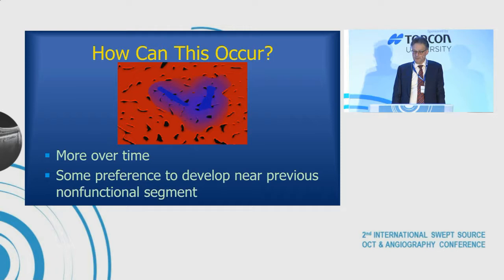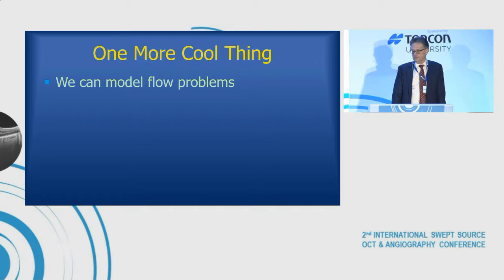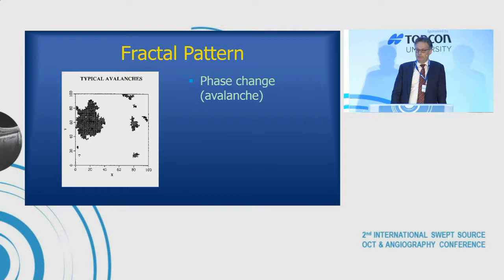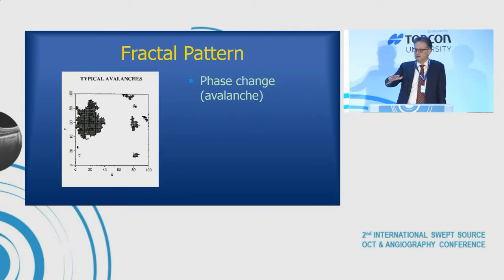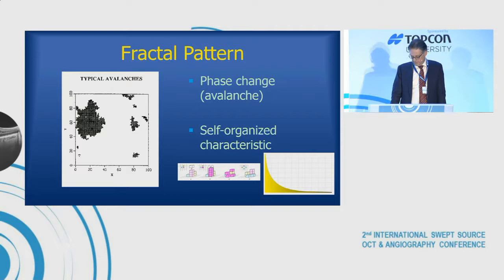There's one more interesting thing: we can model this mathematically. Many kinds of things undergoing a phase change make a structure automatically — that's part of this concept. When you get a phase change, all the changes happen near it in a power law distribution, they make fractals, and this self-organized characteristic happens in nature automatically.